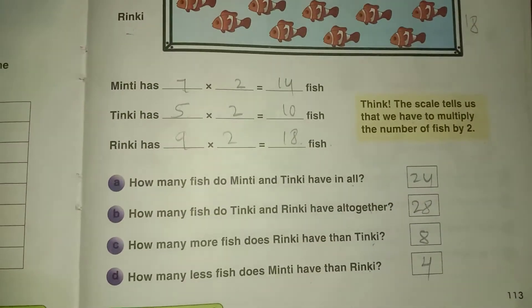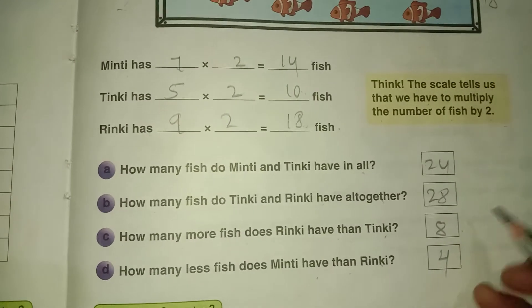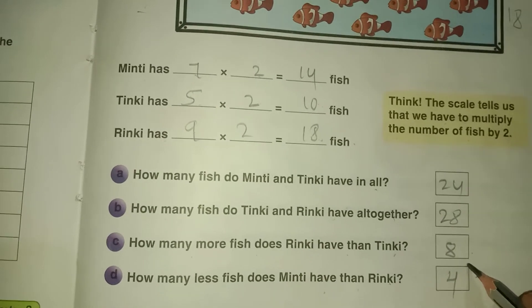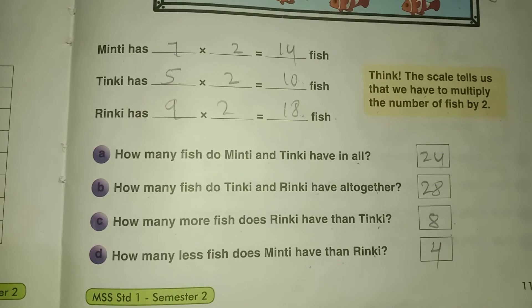Four fish less than Rinky and eight fish more than Tinky. Dear students, carefully once again repeat at your home. In next class we will continue with some more examples. Thank you.